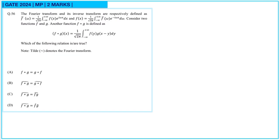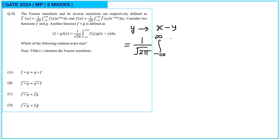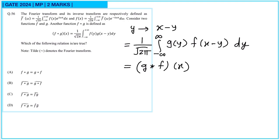Next question. The Fourier transform and its inverse are respectively defined. Consider two functions f and g, and the convolution f★g. Changing the variable y to x minus y in the convolution integral shows that f★g of x equals g★f of x. So convolution is commutative, and option A is correct.